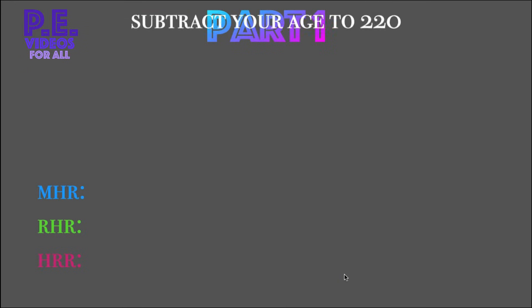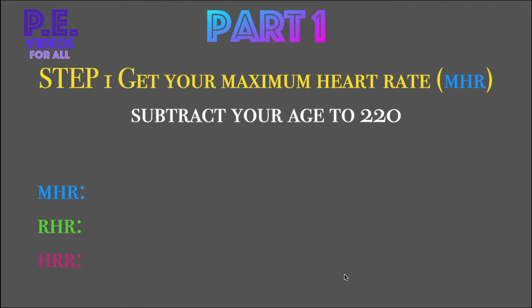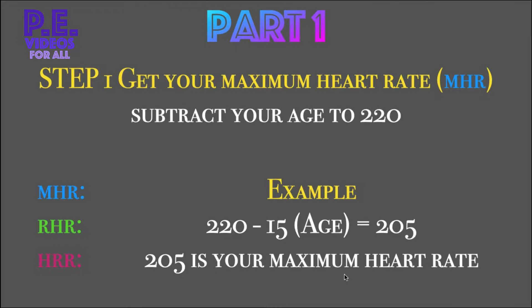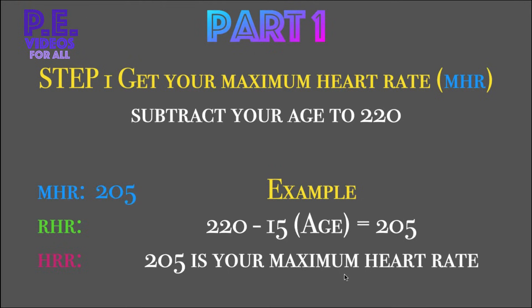Part one, step one: get your maximum heart rate. To do this, you need to subtract your age from 220. Example: 220 minus 15, which is your age, equals 205. 205 is your maximum heart rate.